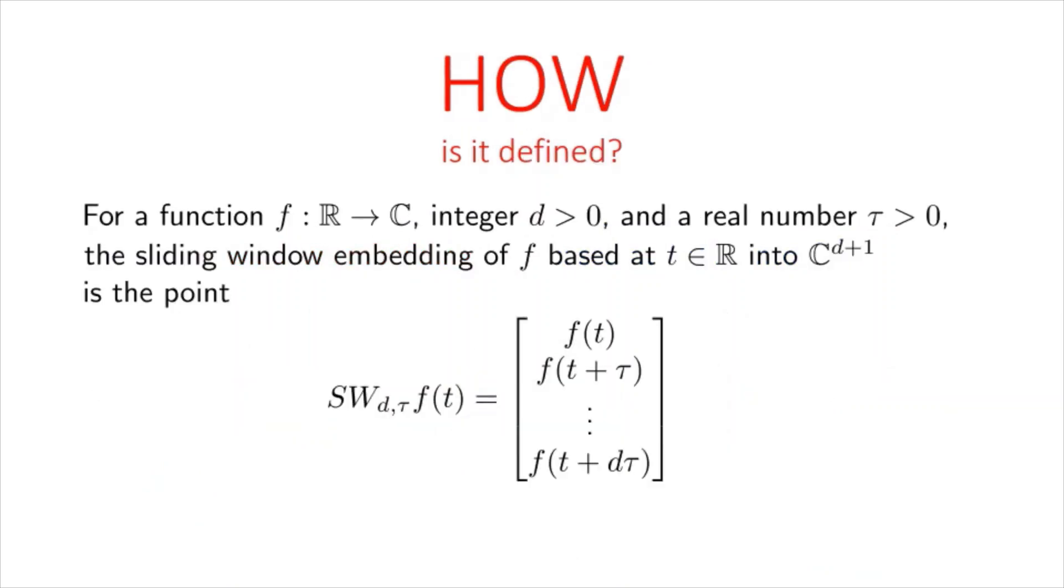So how do we define it? For a complex valued function f and embedding parameters d and tau, where d is called the embedding dimension and tau is called the time delay, the sliding window embedding of f based at t is this d plus one dimensional vector with values f of t, f of t plus tau, f of t plus two tau, so on till f of t plus d tau.